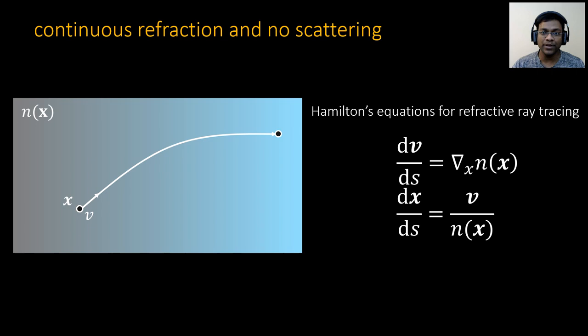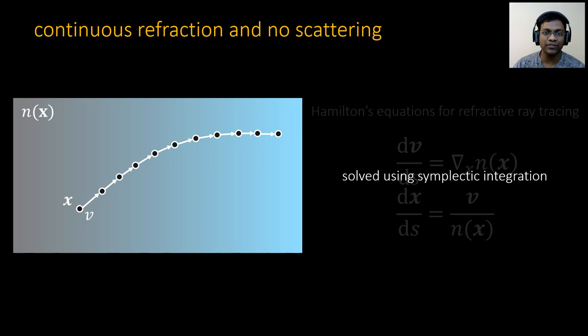How do we solve RRTE and build a simulator? Let us begin with the case of a medium where there is only continuous refraction and no scattering. As mentioned earlier, light travels along curved paths inside such a medium. Given an initial point and direction, we can trace such curved paths by solving Hamilton's equations with a numerical integrator.